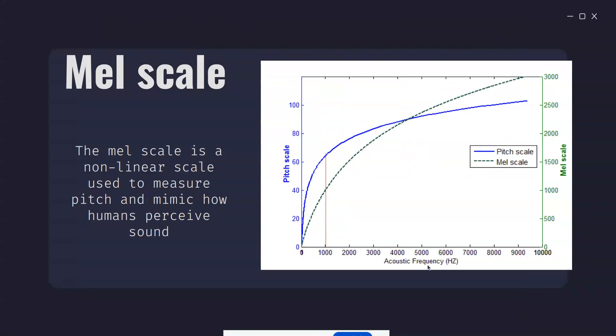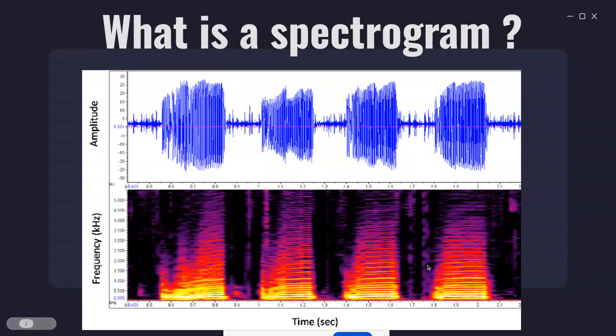Now let's talk about the difference between a spectrogram and a mel spectrogram. A mel spectrogram is basically a version of a normal spectrogram where we use something called the mel scale on the frequency axis. We convert to the mel scale because it very closely aligns with human auditory perception — how humans perceive sound. That's why mel spectrogram is widely used in speaker recognition and machine learning tasks when processing human speech.